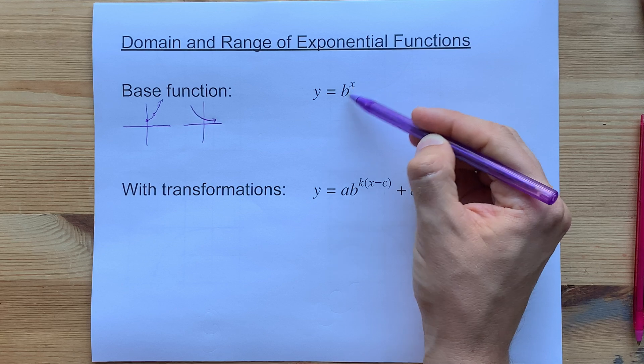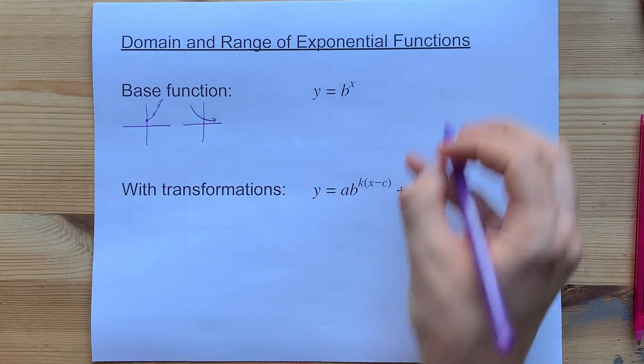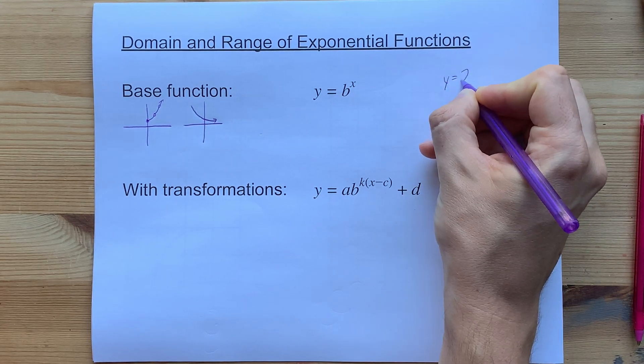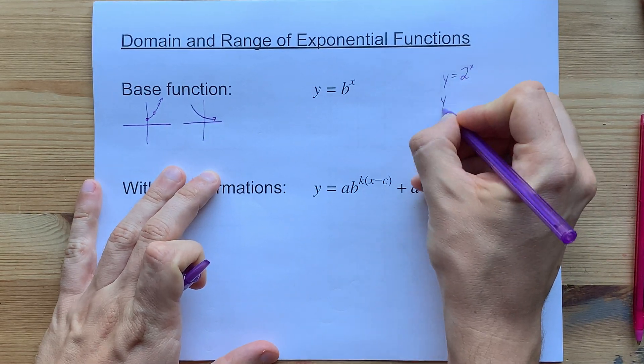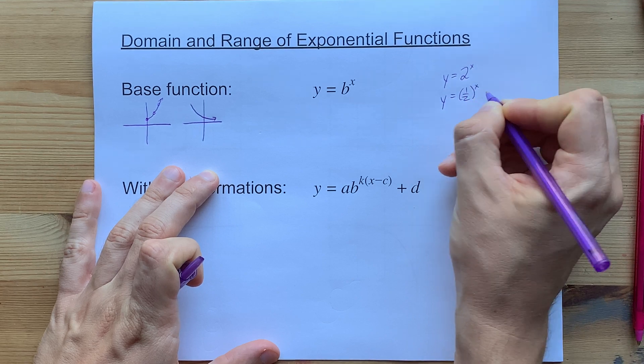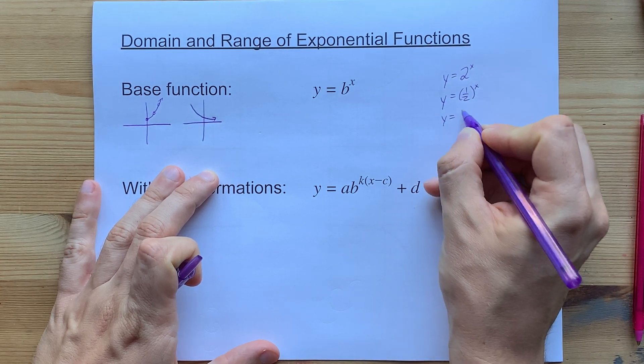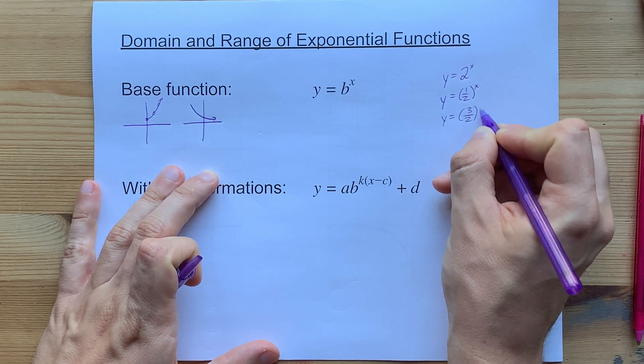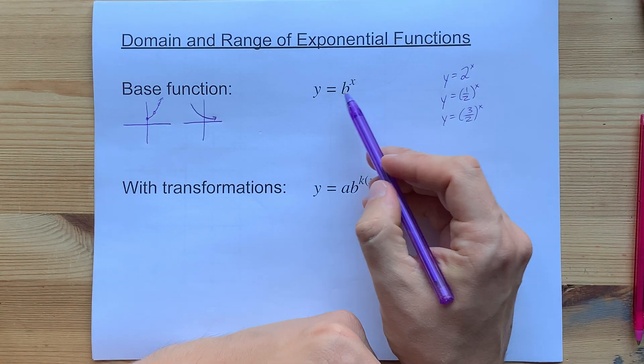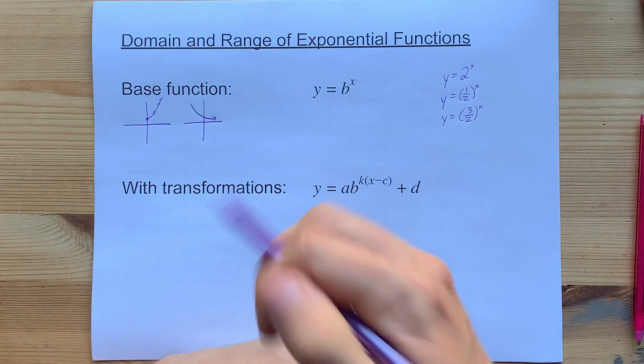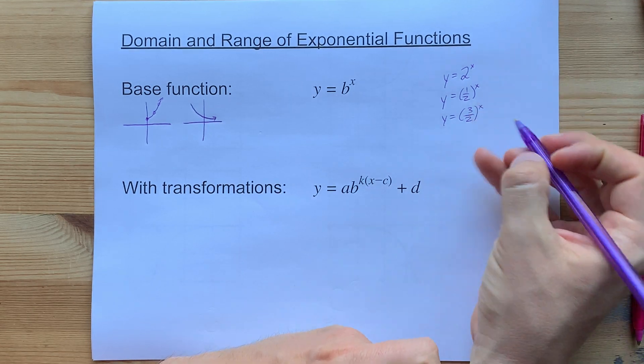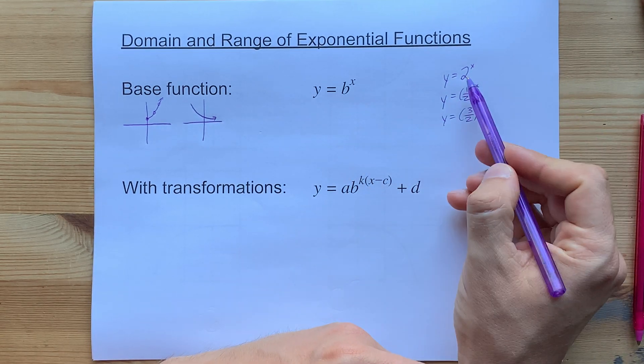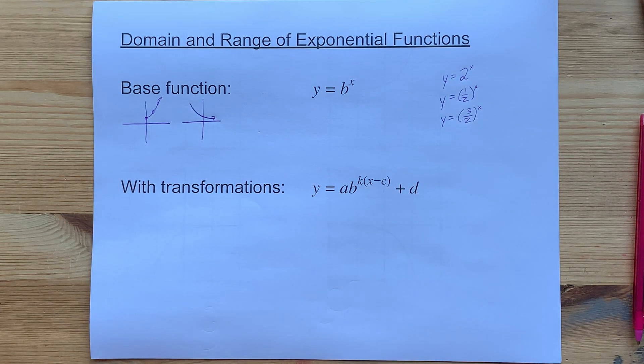The fact that x is in the exponent is what makes it an exponential function, but you can have 2 to the x, that's a whole number to the power of x. You can have fractions to the x, that fraction might be less than 1 or greater than 1. The only values that we generally don't see for b are negative 1s, 0 and 1. So anything that's positive and not 1 is generally acceptable for a base.